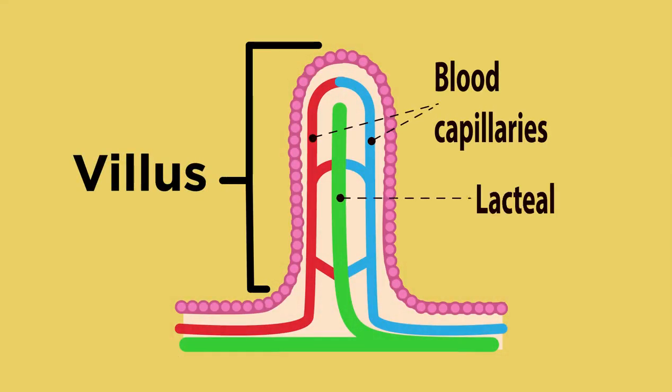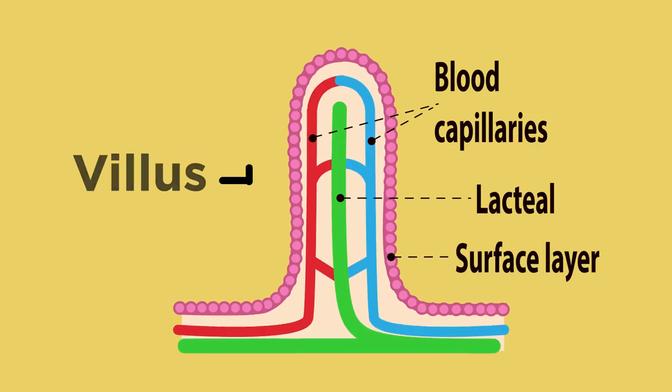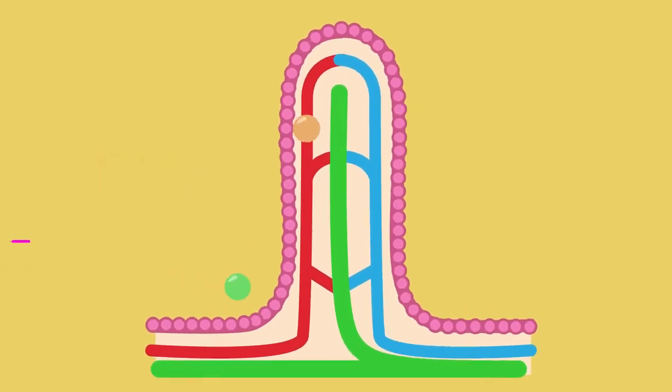Each villus has a tiny blood vessel called a capillary and another vessel called a lacteal. The food molecules pass from the villi of the small intestine into either the blood capillary or the lacteal.